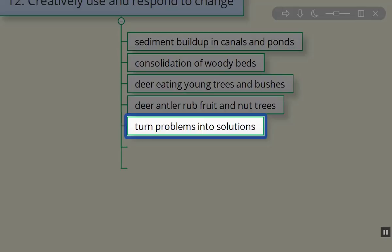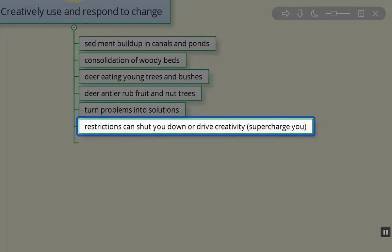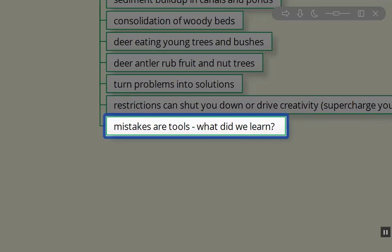So turn problems into solutions. It's how we look at them. Restrictions can shut us down or drive creativity, supercharge us. And that goes from a political or neighborhood issues that might make you think, geez, there's no way I can accomplish this. Or it could be the pest that's on site, like the white tailed deer that I talked about, or it could be people worried about mosquitoes on site with their pond systems. These drive our creativity and help us find the appropriate solutions to these problems. You know, mistakes are tools. It's what we learn from them that we find most valuable because that tool we can apply to other systems. It doesn't have to be the exact same problem again.